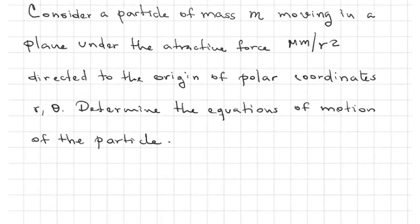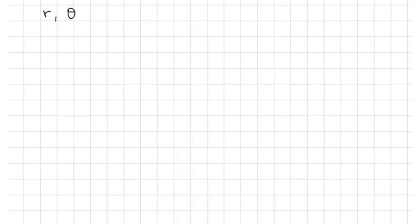Hello guys, welcome to a new video. In this opportunity I want to talk about a particle that is moving under an attractive force. The problem says: consider a particle of mass m moving in a plane under the attractive force n·mu divided by r squared, where r is the distance between the particle and the origin of coordinates. This force is directed to the origin of polar coordinates r and theta. We want to determine the equations of motion of the particle. This is a problem of two degrees of freedom of a dynamical system because we have two variables r and theta as the parameters that define the state of the system.